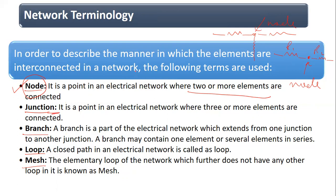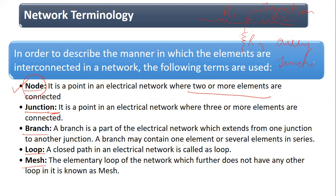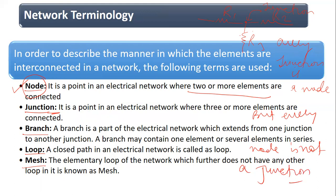A junction is that point where three or more elements are connected. Every junction is a node, but every node is not a junction. This is because the definition of node says two or more elements, while the definition of junction says three or more elements. Since three is greater than two, a junction satisfies the node definition — so every junction is a node. But a node with only two elements is not a junction.